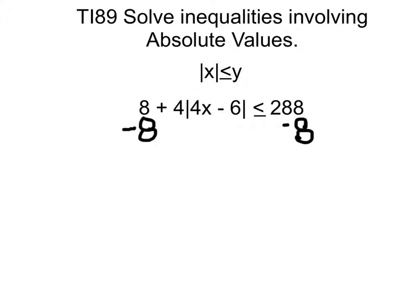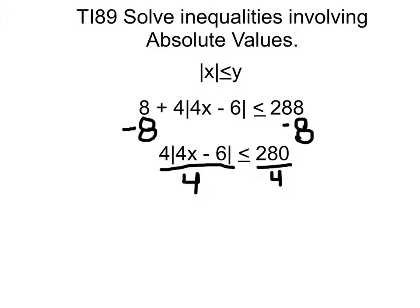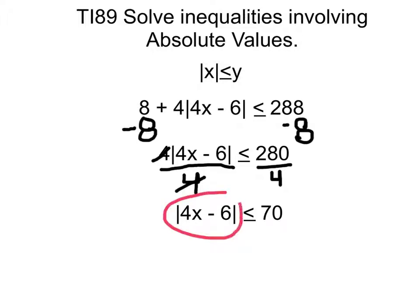First we'll subtract 8 from both sides. That gives us 4 times the absolute value of 4x minus 6, less than or equal to 280. Divide both sides by 4 — these 4s cancel out, and 4 goes into 280 seventy times. So that gives us the absolute value of 4x minus 6, less than or equal to 70. The first objective was to isolate the absolute value part on one side of the inequality.